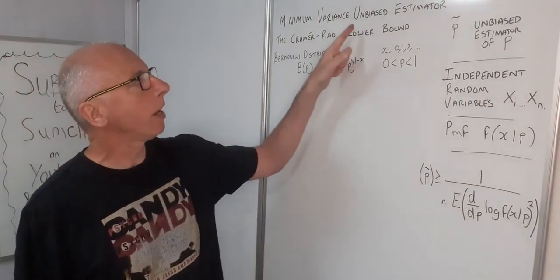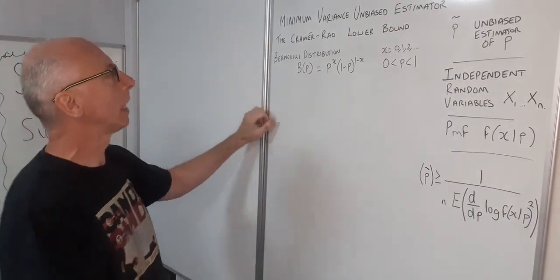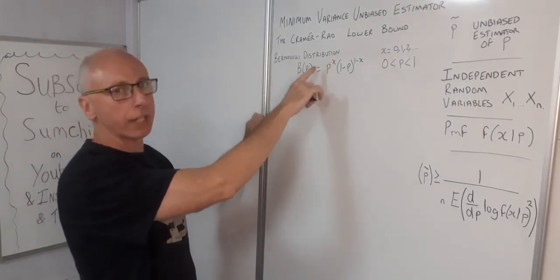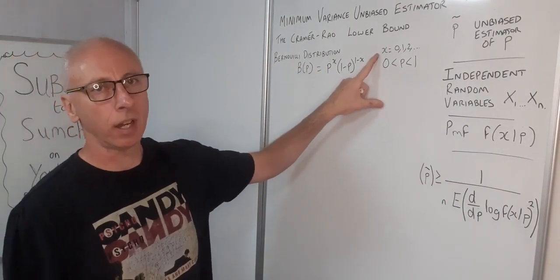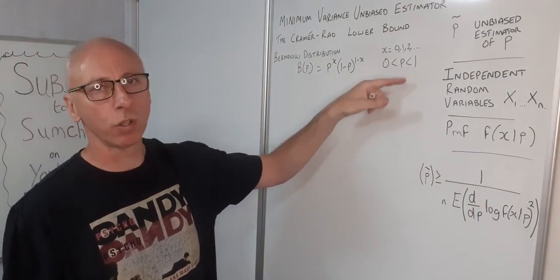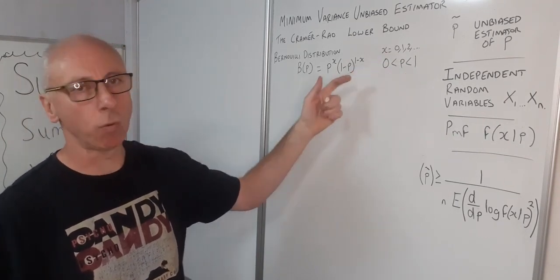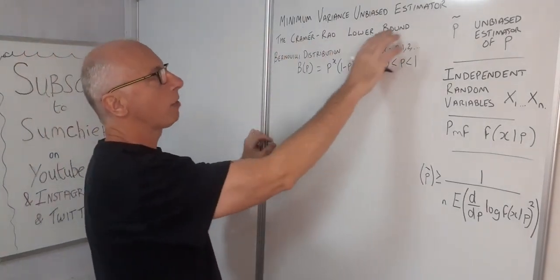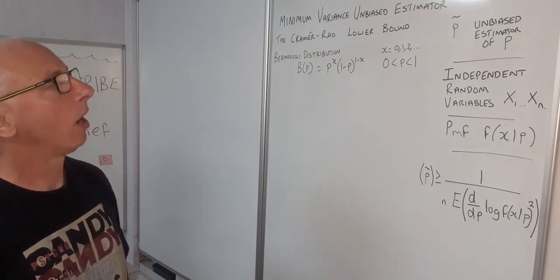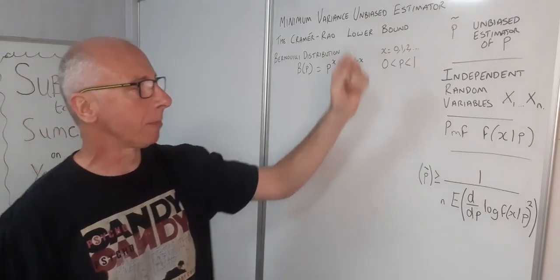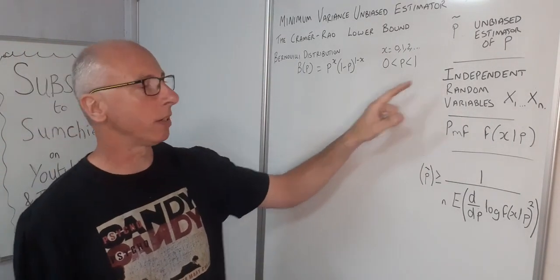We are going to look into the minimum variance unbiased estimator of a discrete distribution. The discrete distribution we're interested in today is the Bernoulli distribution, given by its formula, where X's are integer-valued random variables and our parameter is a probability P between 0 and 1. We're interested in the Cramér-Rao lower bound, which gives the minimum variance unbiased estimator of the parameter P. One key requirement is that all variables must be independent of each other.